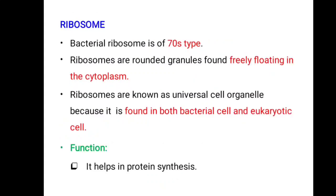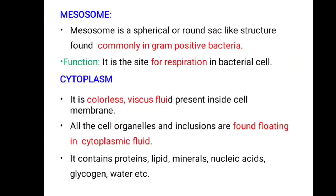Next are ribosomes. Bacterial ribosomes are of the 70S type. Ribosomes are rounded granules found freely floating in the cytoplasm. They are known as universal cell organelles because they are found in both bacterial and eukaryotic cells. The function of ribosomes is to help in protein synthesis. Next are mesosomes — spherical or round sac-like structures found commonly in gram-positive bacteria. The function of the mesosome is that it is the site for respiration in the bacterial cell.